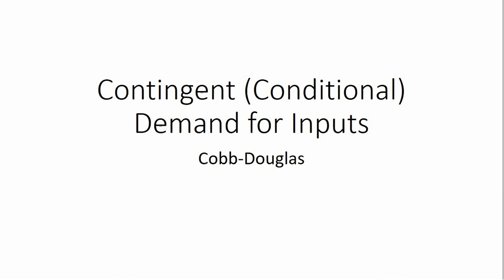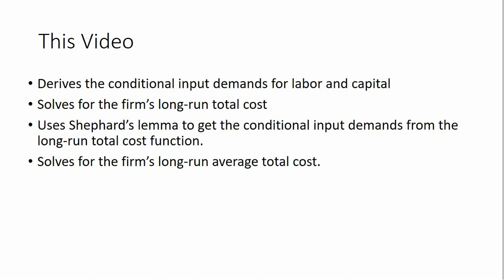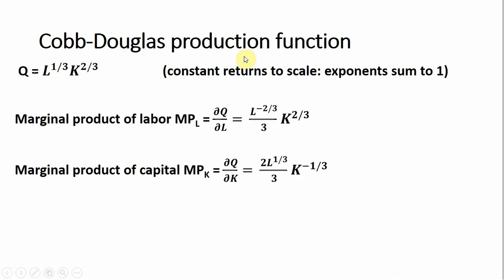Hello. In this video, we're going to look at a number of things. Primarily, we're going to derive the conditional input demands from a Cobb-Douglas production function. We're going to do numerous things here. First, we're going to derive the conditional input demands for labor and capital. On the way, we're going to solve for the firm's long-run total cost equation. I'll show you the use of Shephard's Lemma to get the conditional input demands from the long-run total cost function. And we will also quickly solve for the firm's long-run average total cost. We're going to start with a Cobb-Douglas production function. Notice that the exponents here sum to one, so we're dealing with constant returns to scale. As we're going to see at the end of the video, that will imply a horizontal long-run average total cost curve.